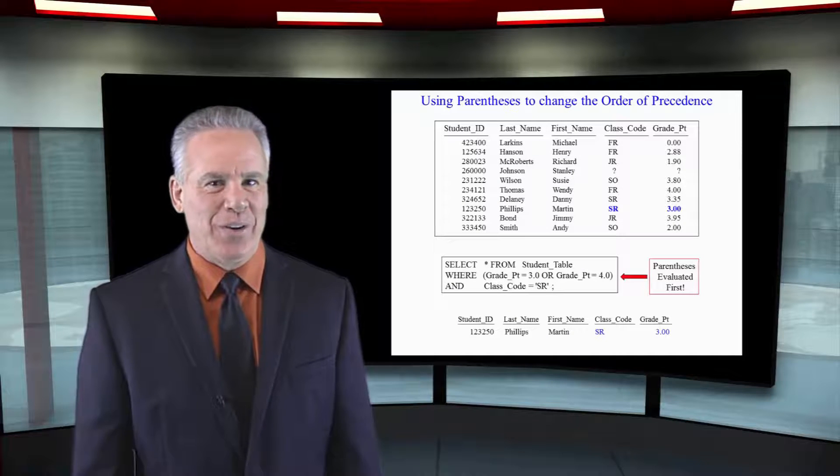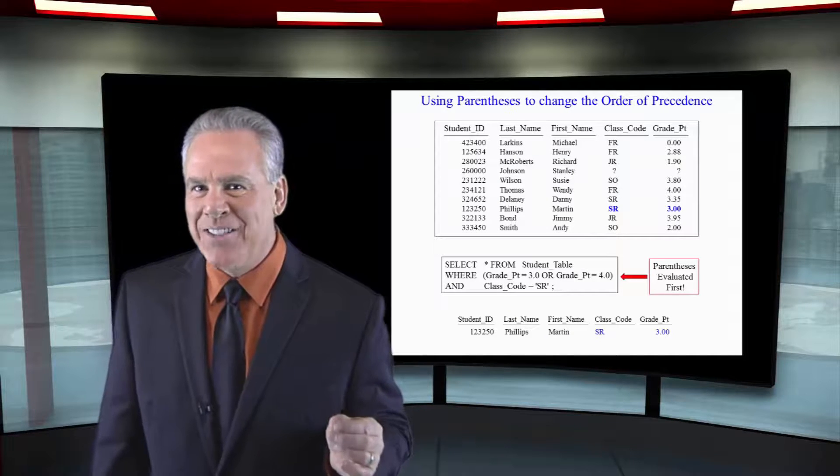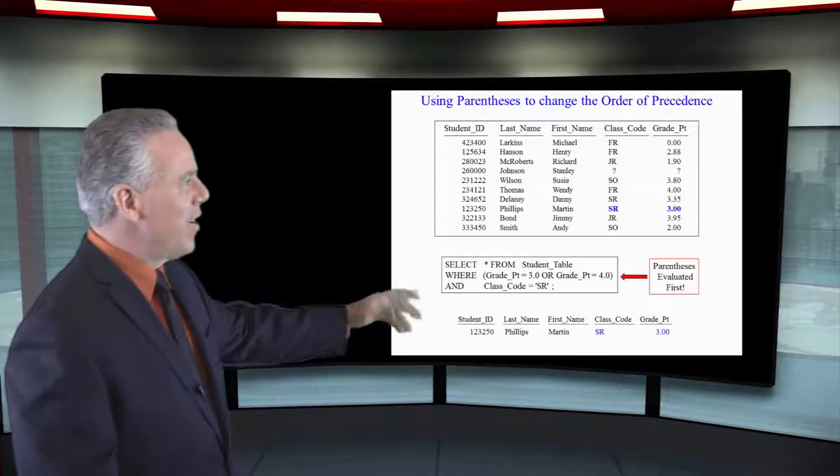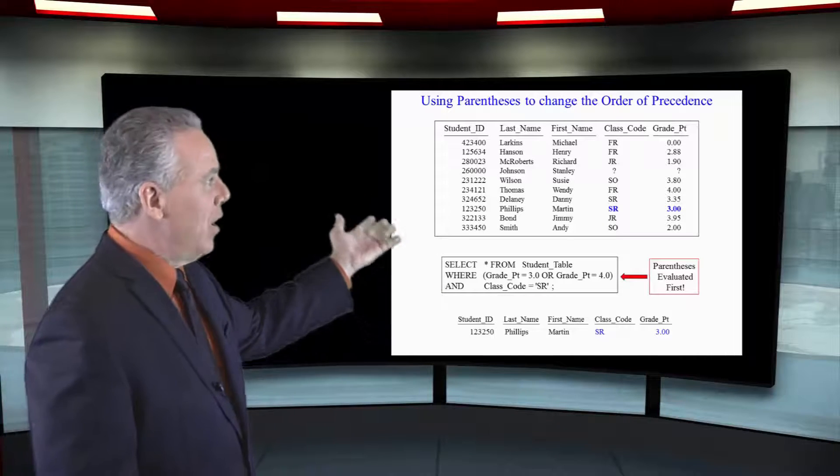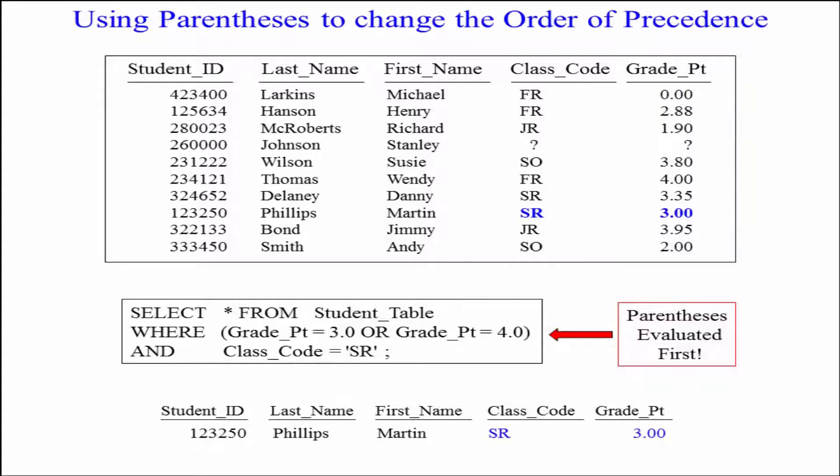I sprinkled this query with a little Terra Tom magic and fixed it. Notice here, I've got open paren and you can see where open paren grade point equals 3.0 or grade point equals 4.0 close paren. Again,